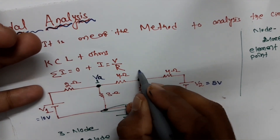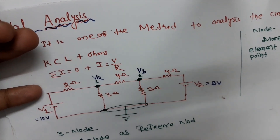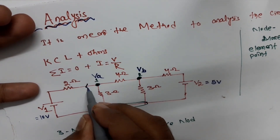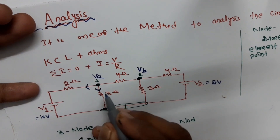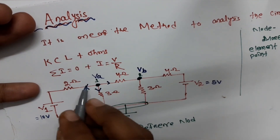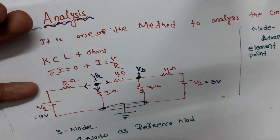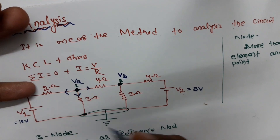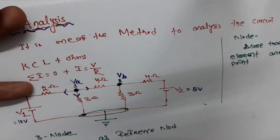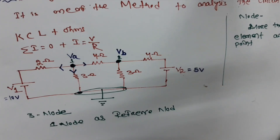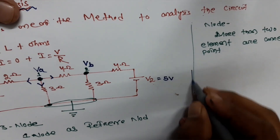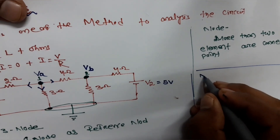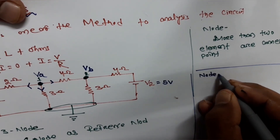Let's assume this node voltage is Va and this node voltage is Vb. Here we apply KCL plus Ohm's law. For node 1, the voltage at this node is always at higher potential. Let's write the node 1 equation.